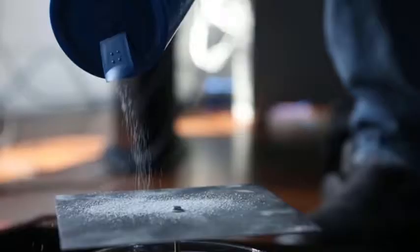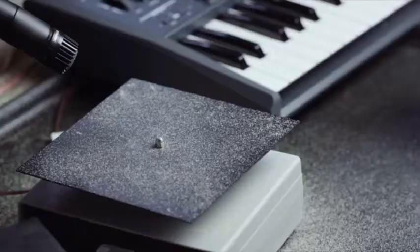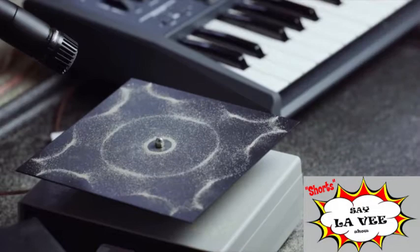A Chladni plate is basically a metal plate attached to the top of a speaker. There's sand on top of the plate and you play different tones through the speaker. The plate vibrates which forms different shapes depending on the frequency of the sound.